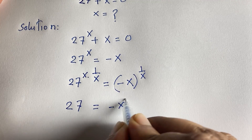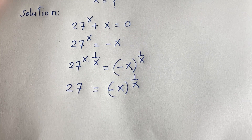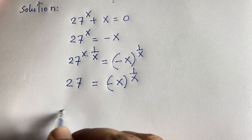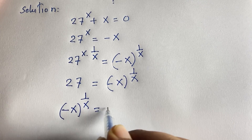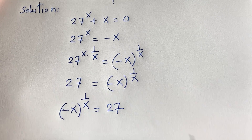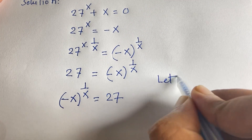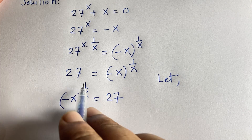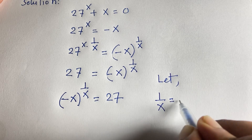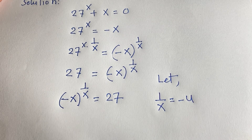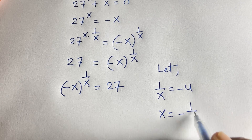The equation becomes (-x)^(1/x) = 27. Now I let -x = 1/u and 1/x = -u, so I can see easily that x = -1/u and -x = 1/u.